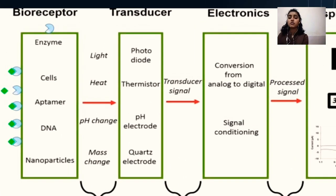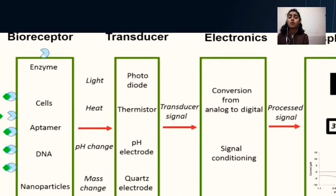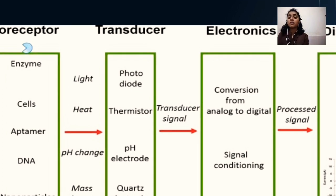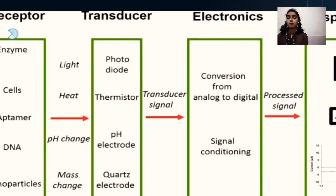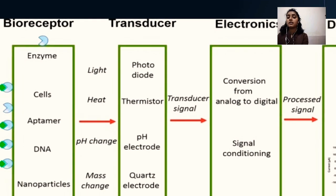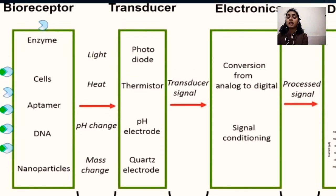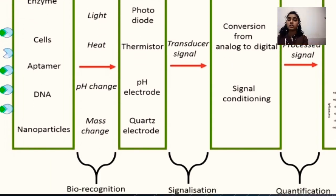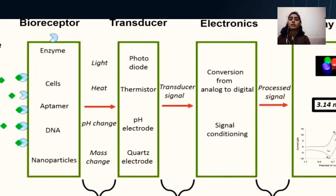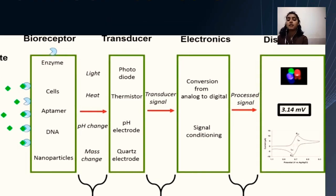After that, we have transducers. A transducer is an element that converts one form of energy into another. In a biosensor, it converts the biorecognition event into a measurable signal. The biorecognition event can be light, heat, pH change, or mass change. This process is called signalization.